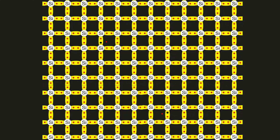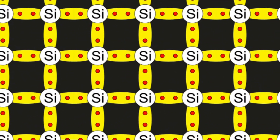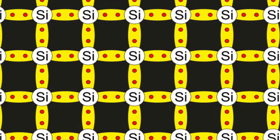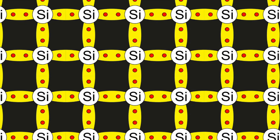Each silicon atom is going to be bonded with another four silicon atoms. The red dots represent the valence electrons of each silicon atom. Each silicon atom is going to share one electron with another silicon atom, and therefore it will form a covalent bond with the silicon atom that is beside it. This happens to another three silicon atoms as well to form this structure.